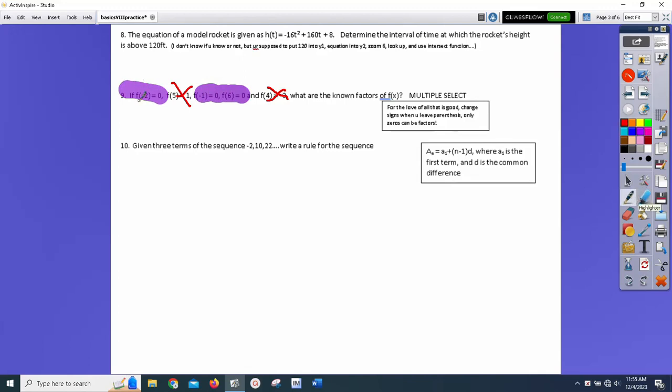The only things that can be factors are those three things. Now, this says right here, x minus, or x is negative two. If I shift it over, I get x plus two is zero, and this is the factor. Do you see how that works?